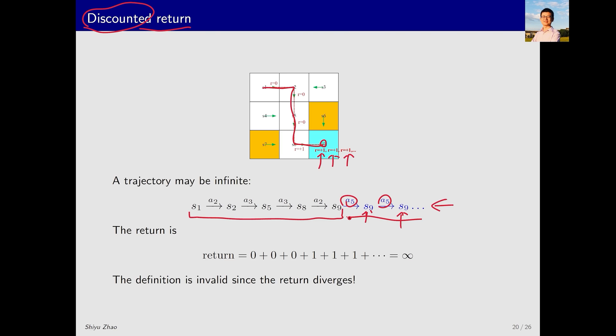Therefore, this trajectory is infinitely long. If we sum up the rewards, the initial part remains 0, but after reaching the target, the continuous addition of positive 1 leads to infinity. Thus, the return along this infinitely long trajectory diverges.